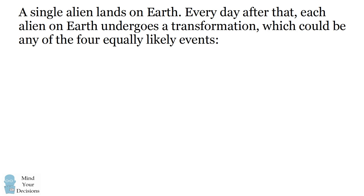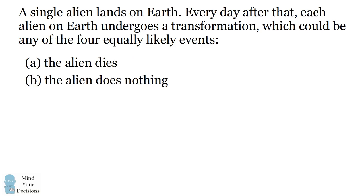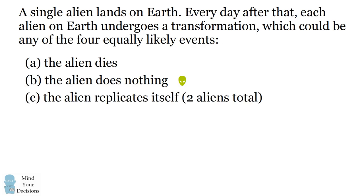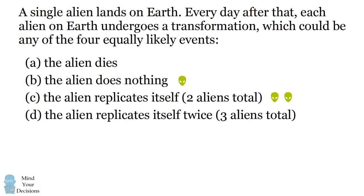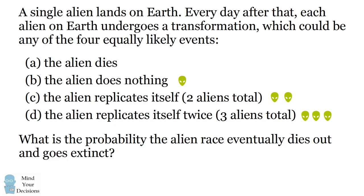Hey, this is Presh Talwalkar. A single alien lands on Earth. Every day after that, each alien on Earth undergoes a transformation, which could be any of four equally likely events: the alien could die, the alien could do nothing, the alien could replicate itself (making two aliens total), or the alien could replicate itself two times (making three aliens total). What is the probability the alien race eventually dies out and goes extinct? This question is sometimes asked as an interview question for technical jobs. Give this problem a try, and when you're ready, keep watching the video for the solution.